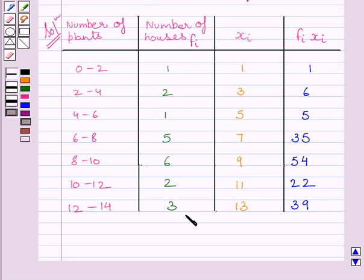Now we will find out summation FI by adding all these frequencies. And we know this is the data for 20 houses, so sum of these frequencies is equal to 20. Let us now find out summation FI XI. Summation FI XI is equal to sum of all these products, and sum of all these products is equal to 162.